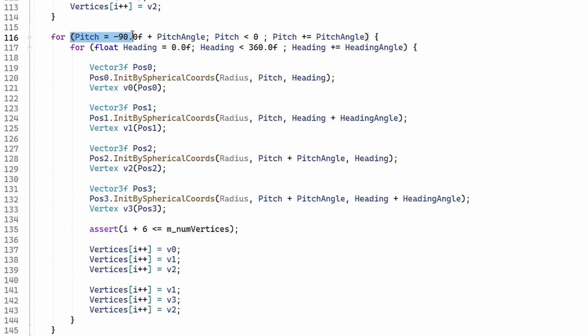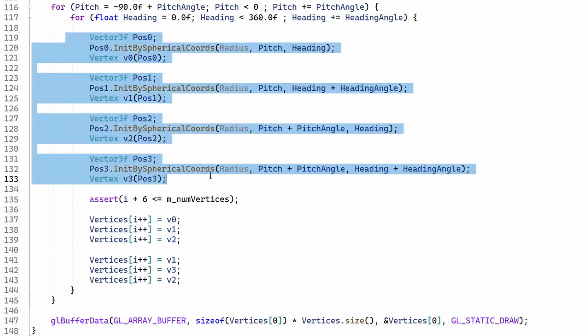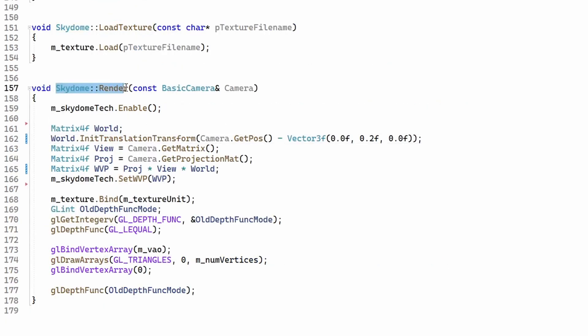So we have the top strip and then the rest is here. We need to go over all the rows and the columns and in this case we have a quad of four vertices and we initialize two triangles. In order to render the sky dome we initialize a world matrix which places the sky dome at the position of the camera and we also bring this down a bit as we saw.